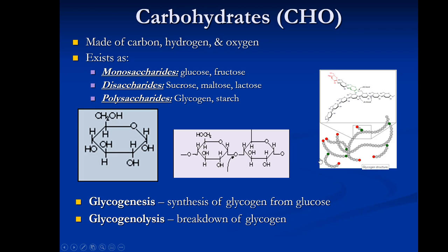Glycogen is basically a long chain of glucose molecules — it's how we store carbohydrate in the body. Starch is the plant version. After we eat, we go through glycogenesis, where we synthesize glycogen from glucose and put it in storage form. During exercise or when we need energy, we break down that glycogen through glycogenolysis so we can use it for energy.